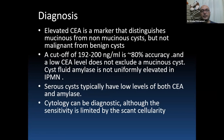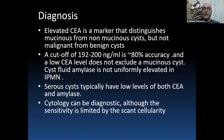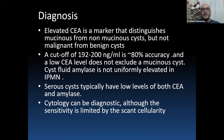Elevated carcinoembryonic antigen (CEA) is a marker distinguishing mucinous from non-mucinous cysts, but cannot differentiate malignant from benign cysts. A cutoff of 192-200 ng/mL gives 80% accuracy, and a low CEA level does not exclude a mucinous cyst. Cystic fluid amylase is elevated in IPMN. Serous cysts typically have low levels of both CEA and amylase, and cytology can be diagnostic although sensitivity is limited by scant cellularity.